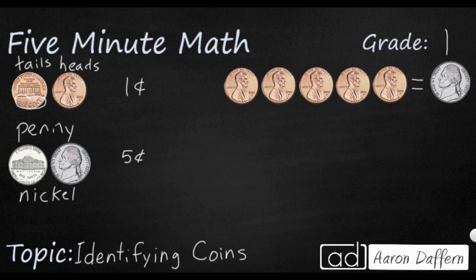Now we write five cents with the number five, and then that little C with a line through it. And if you look over here on the left, you see that I've got five pennies all lined up, and they're each worth one cent. But if you put all those five pennies together, you can actually trade them in for a nickel, because a nickel, remember, is worth five cents. So if you want to make five cents, you can either use five pennies, or you can use one nickel.